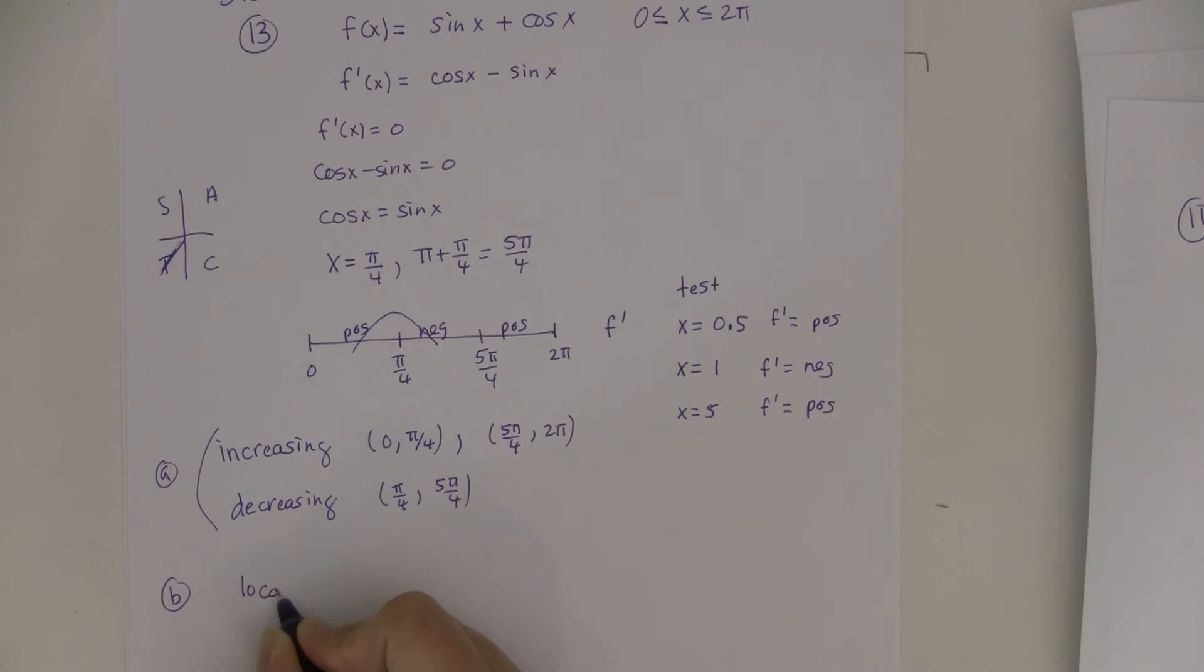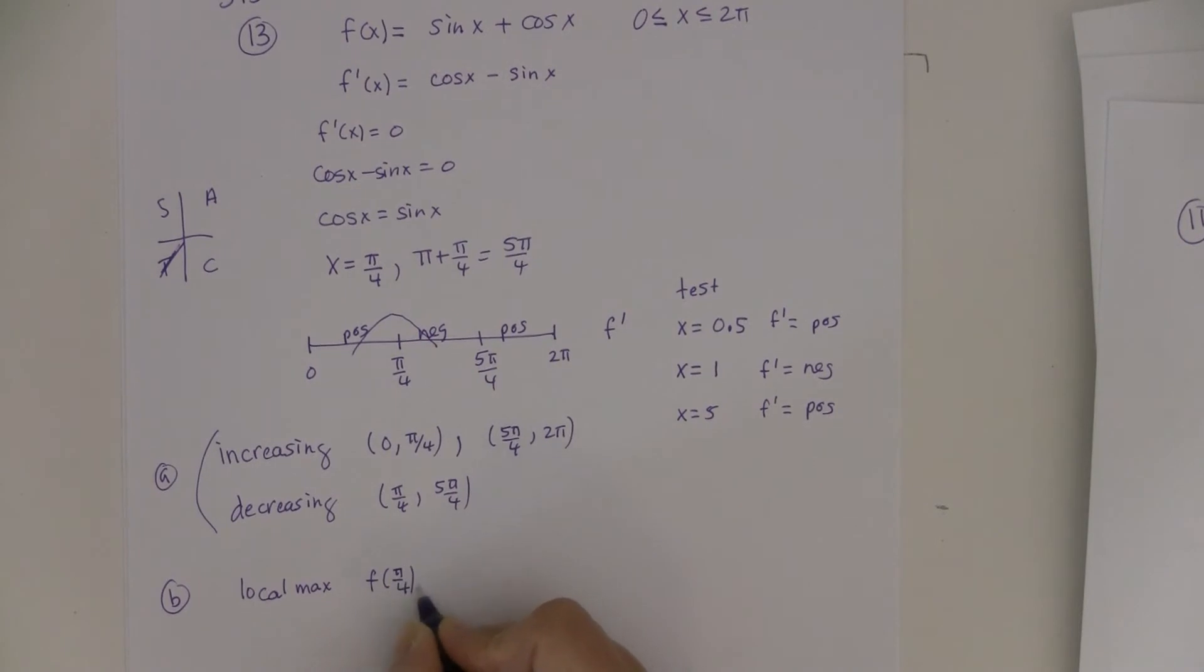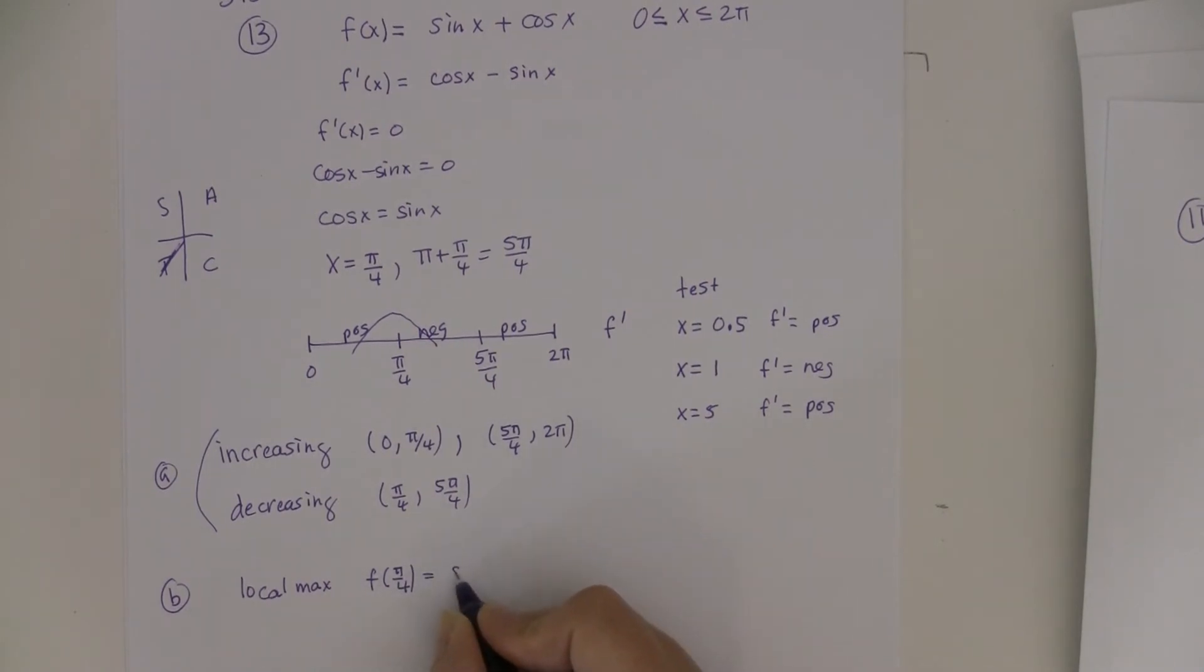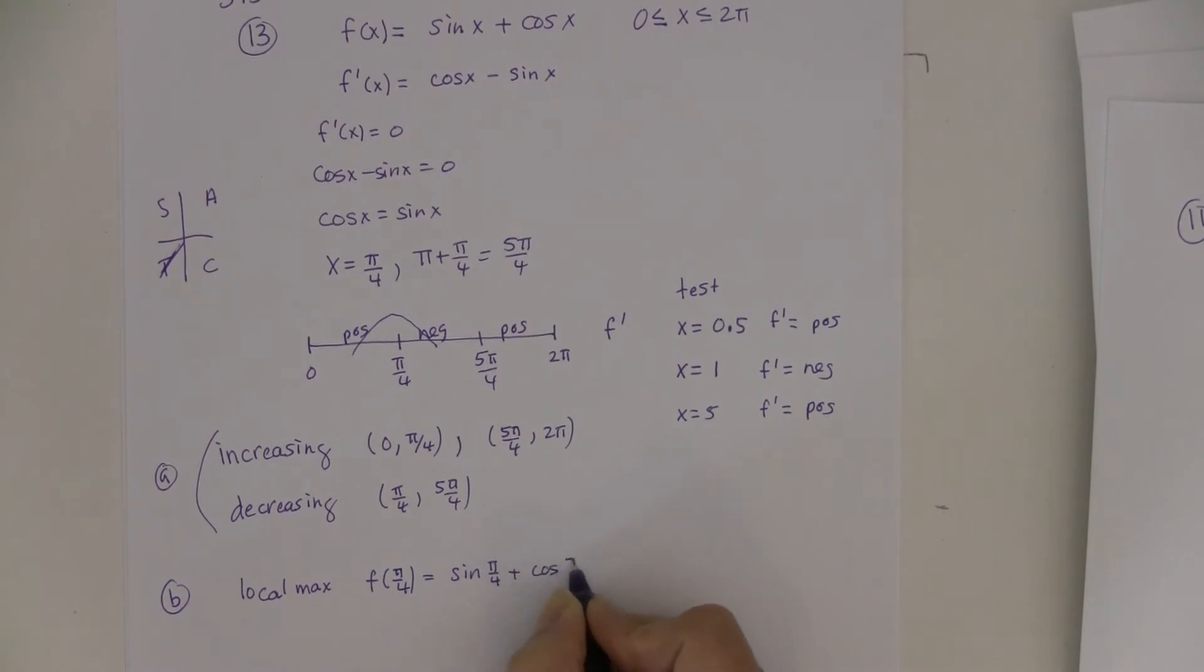And so it's going up and then down. So that's a max. So local max at f of pi over 4. So that's sine of pi over 4 plus cosine of pi over 4. And I think they're both equal to the square root of 2 over 2. So when I add those together, it'd be 2.